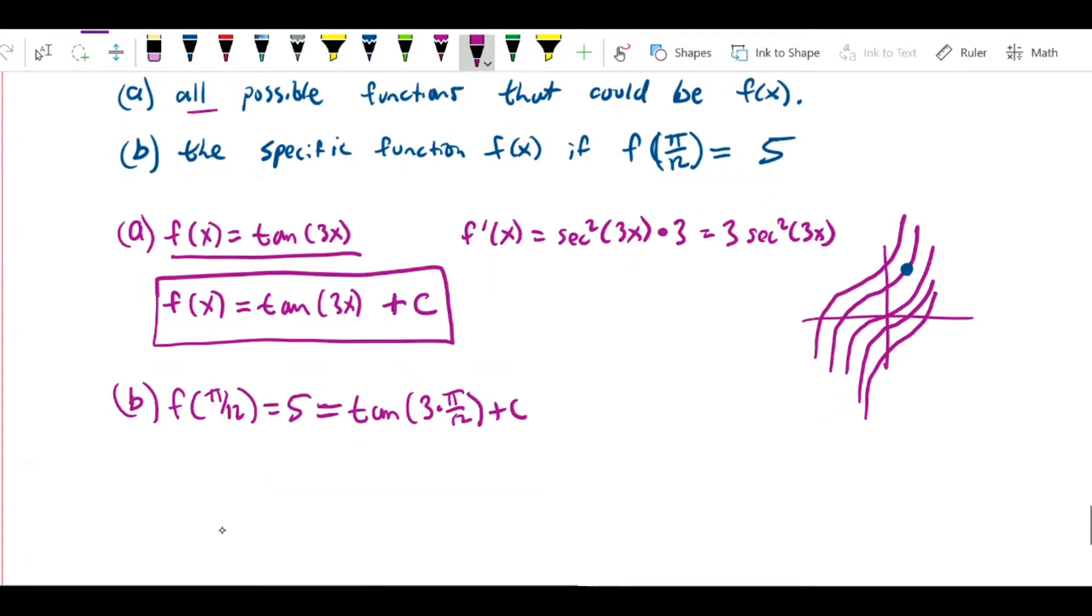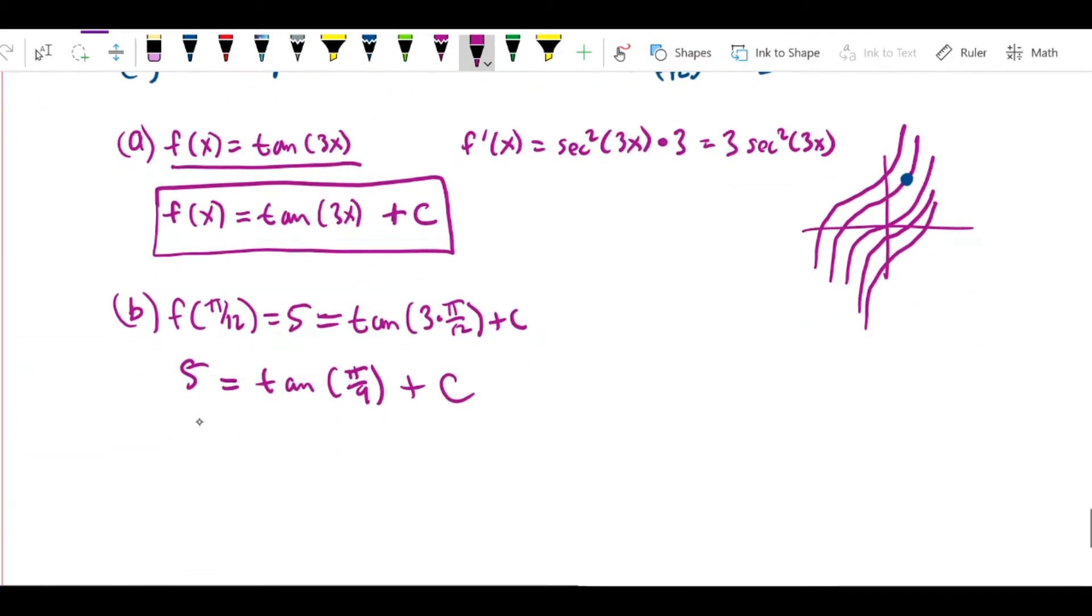So that gives me 5 equals tan(3π/12), which is the same as tan(π/4) + C. Tan(π/4) is 1, so that means that 5 equals 1 + C, so C is equal to 4.